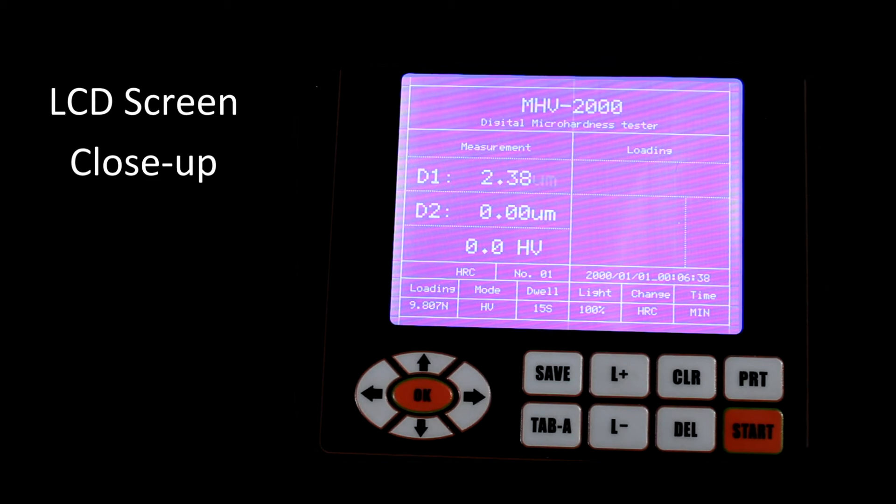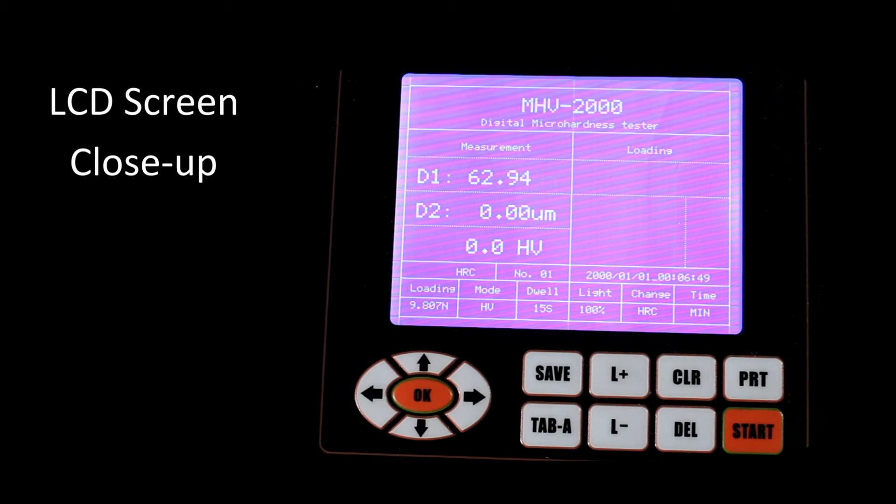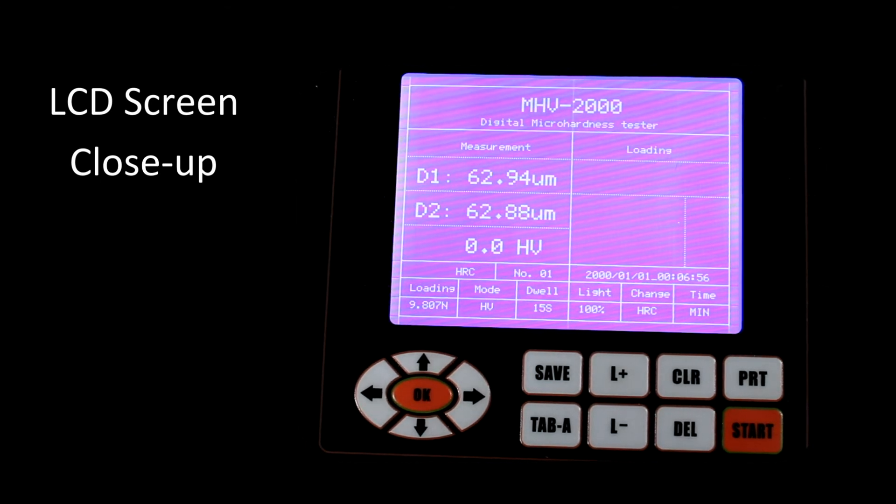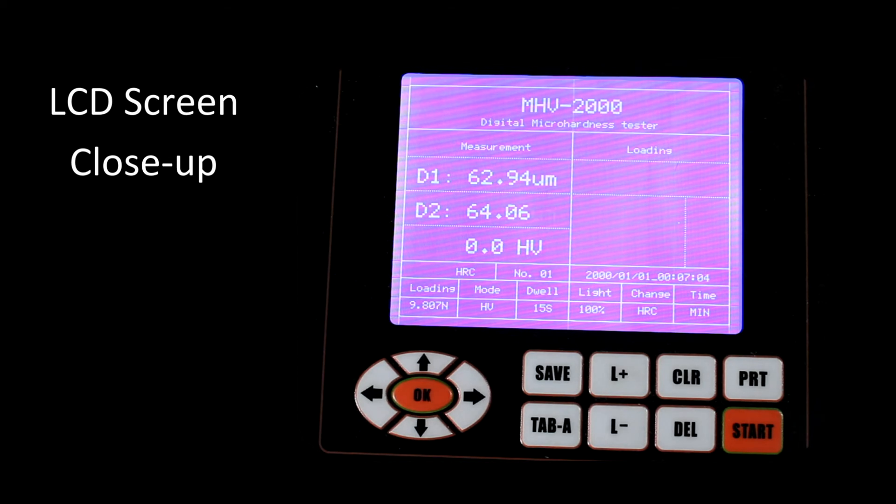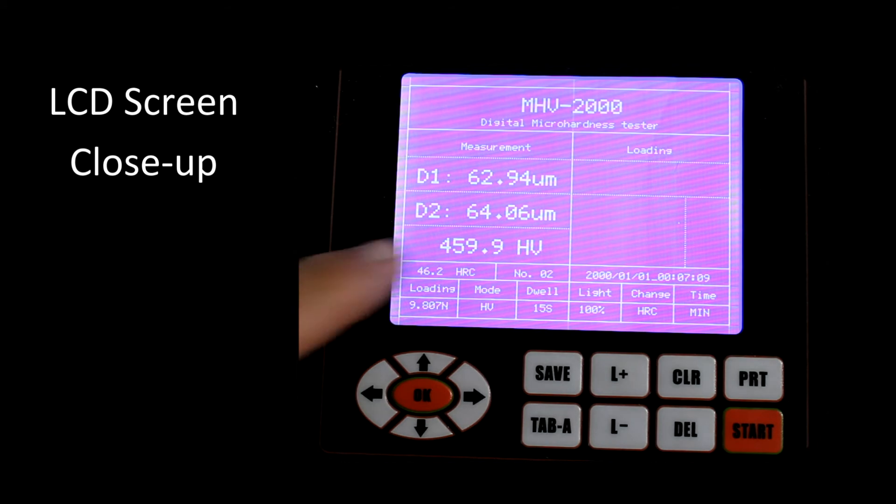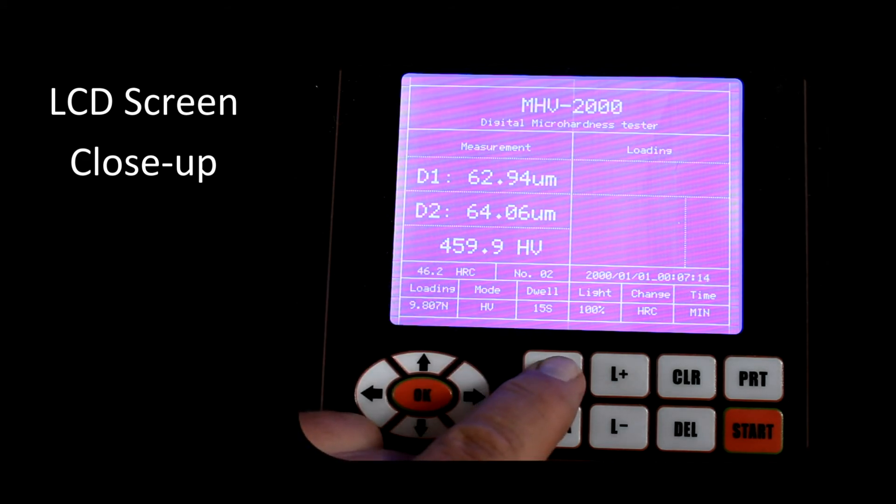And what we do is we'll focus on the indent. And then we'll move the left filer to the left side of the indent. And then the right filer to the right side of the indent. And once that is acceptable, we'll go ahead and press the accept button. Now we'll rotate the filer 90 degrees and measure the diagonal in the other direction. Accept. And this is our measured value. So if that's a good value, we can add that by pressing save.